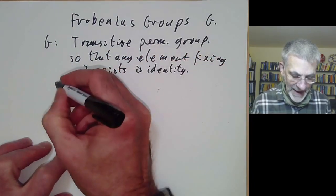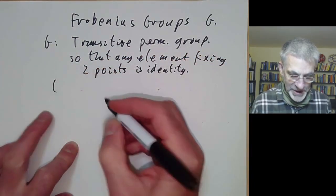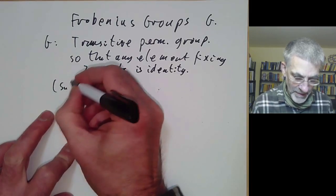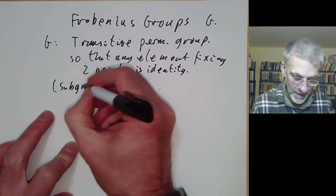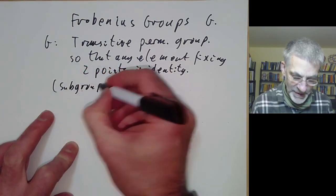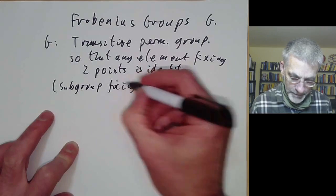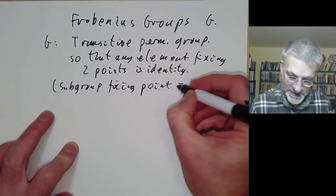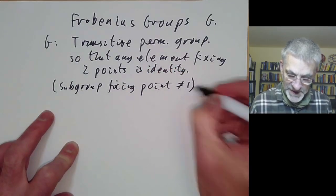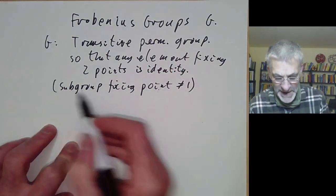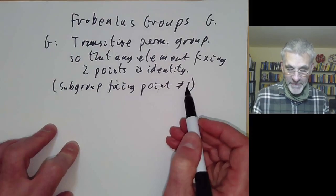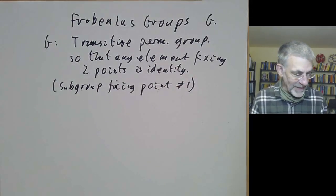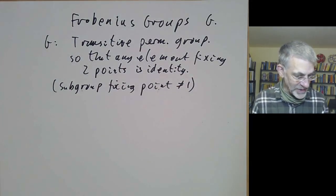We also add an extra condition that the subgroup fixing a point is not the trivial subgroup, because otherwise any group would be a Frobenius group just acting on itself by left translation.